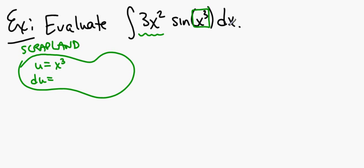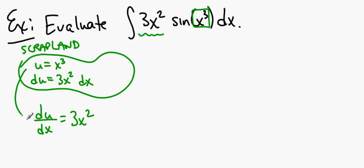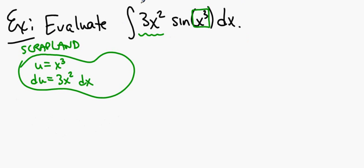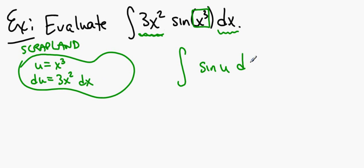We also have to do something with this guy over here. The derivative of u with respect to x is 3x², so du is 3x² dx. The derivative of u with respect to x is 3x² — that's what this means — and we get du equals 3x² dx. So what does this become? This becomes the integral of sine of u — sine of x³ is sine of u — and then all of that gets replaced by du.